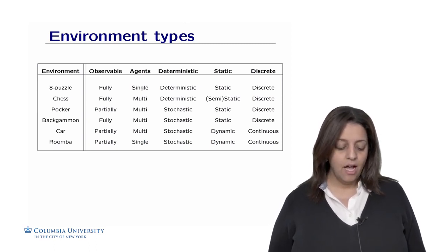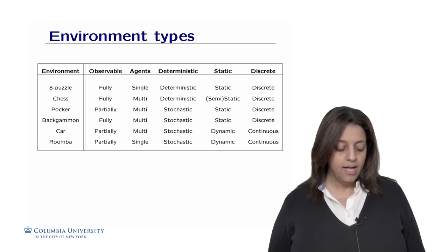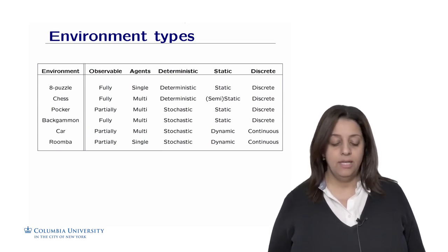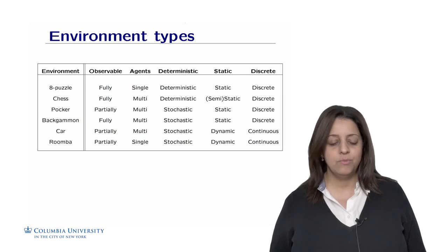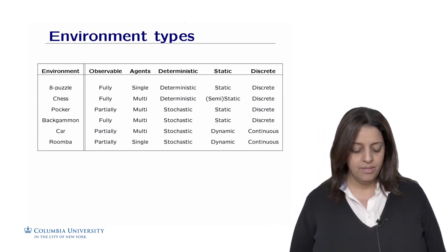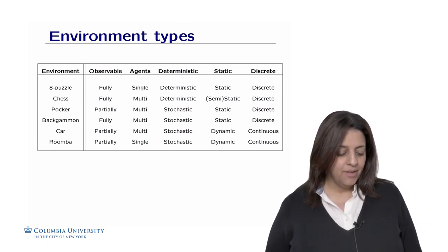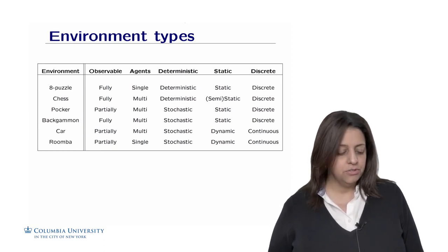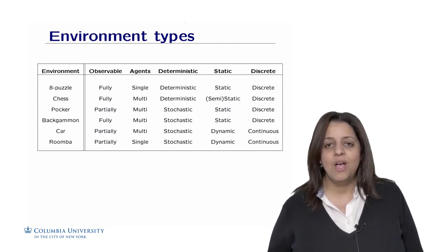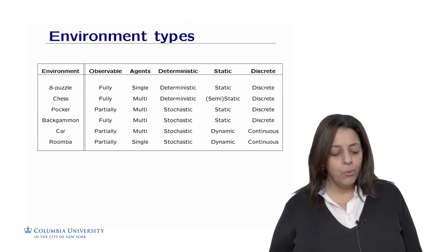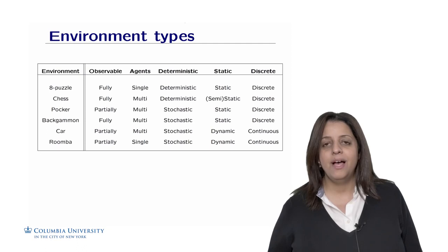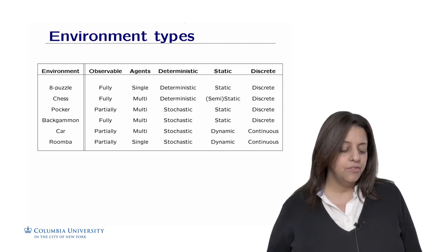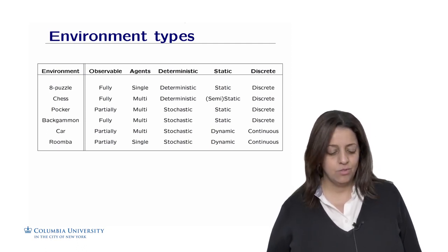They are both stochastic. For the vacuum agent or Roomba, dirt can happen at any time, though the environment could sometimes be considered deterministic as in a simple vacuum world example. For a car, it's multi-agent; for a Roomba, it's single-agent unless you have several Roombas. They are both partially observable — you can't see beyond a big truck ahead of you, and for the Roomba, you can't see under the sofa or into the next room.